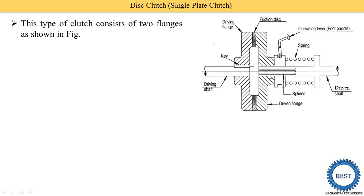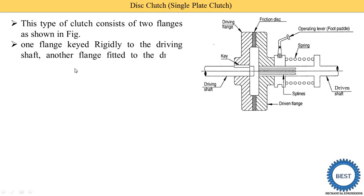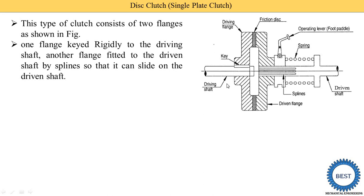On the driven shaft, a spline is provided. In this spline, the driven flange is installed. This is called the driven flange. The driving flange is rigidly keyed to the driving shaft, meaning this driving flange is installed on the driving shaft by using a key. They are not able to move or slide — they rotate, but they are not able to slide.